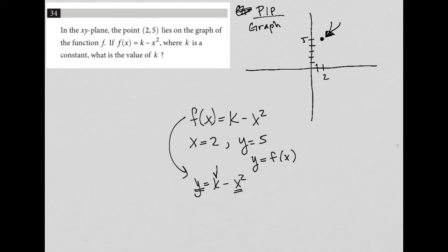That leaves me with k being the only unknown variable. So I'm going to use this information and say, if I have y equals k minus x squared, then I replace y with 5 and replace x with 2.